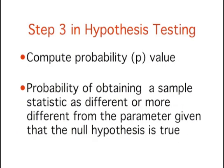The third step is to compute the probability value, also known as the p-value. This is the probability of obtaining a sample statistic as different or more different from the parameter specified in the null hypothesis, given that the null hypothesis is true.